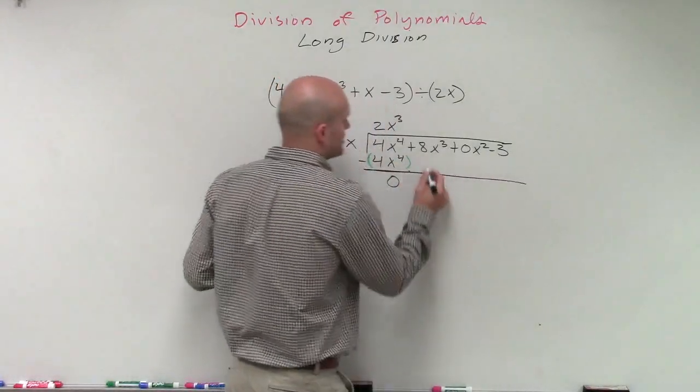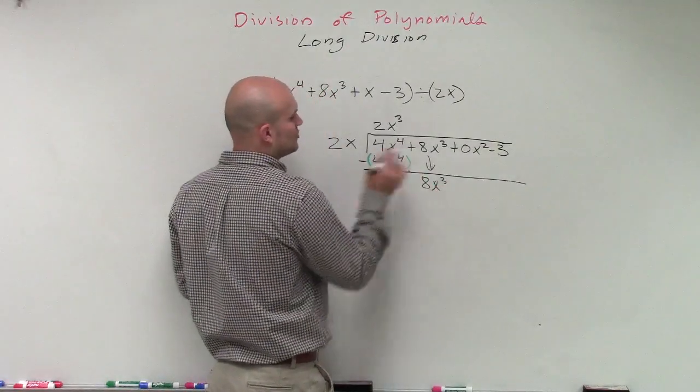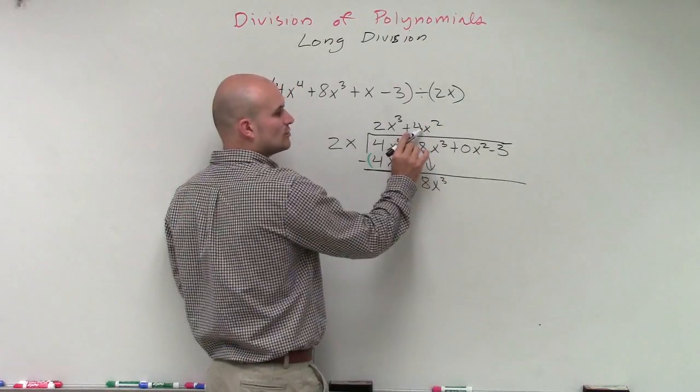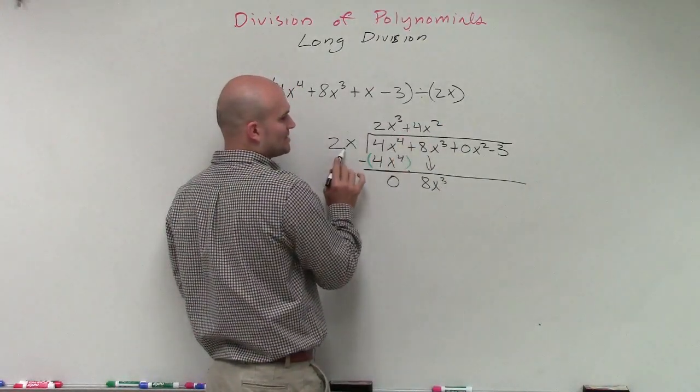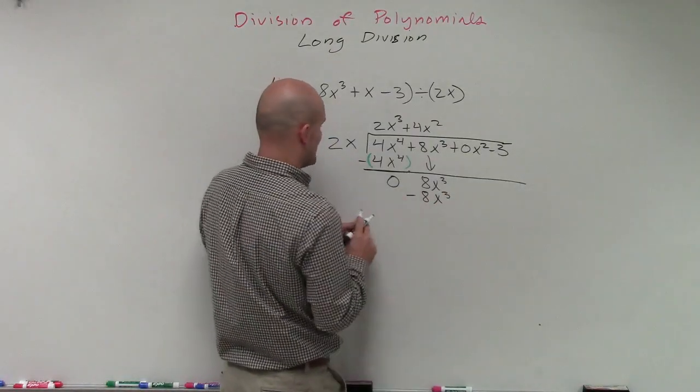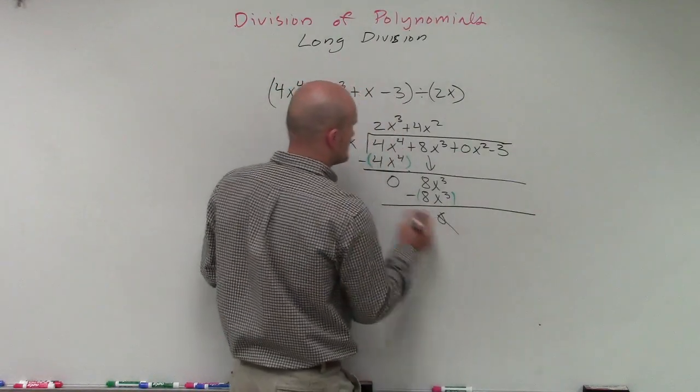So then we have 0. So now I'm going to bring down the next term, which is 8x cubed. 2x divides into 8x cubed a positive 4x squared times. Then I take this part of the quotient, and I multiply it by my divisor to give me 8x cubed. I subtract the whole term. And therefore, that gives me a 0.